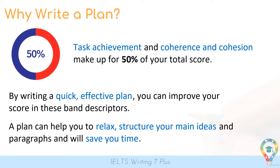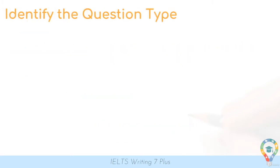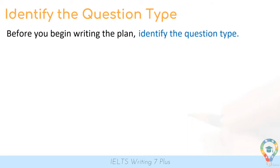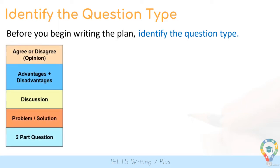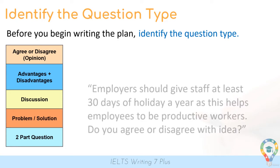The very first part of writing a plan is to identify the question type. So before you begin writing the plan, read the question and identify the question type. Here are the five question types for IELTS Writing Task 2.